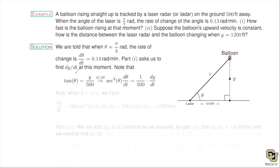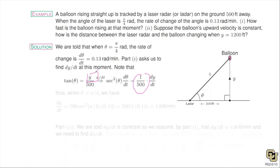Take a derivative — this is implicit differentiation with chain rule, since theta and y are functions of time t. The derivative of tan(theta(t)) is secant squared theta times d theta/dt. On the other side, 1/500 is a constant, so the derivative of y is just dy/dt. Now isolate dy/dt and plug in the given information: theta = π/4 and d theta/dt = 0.13.